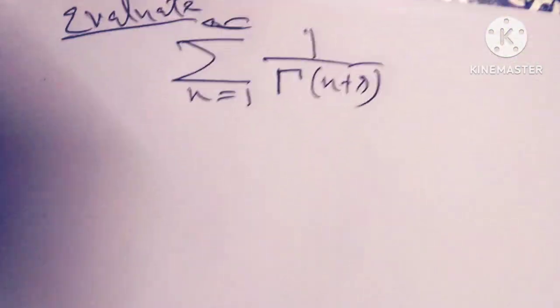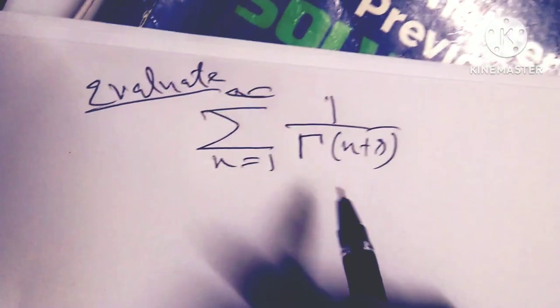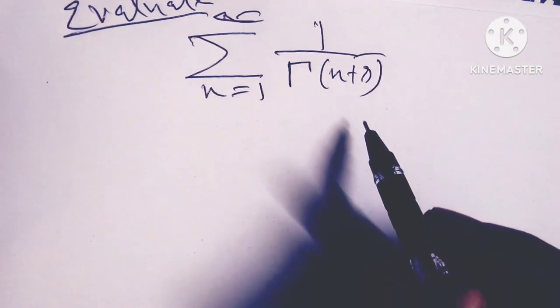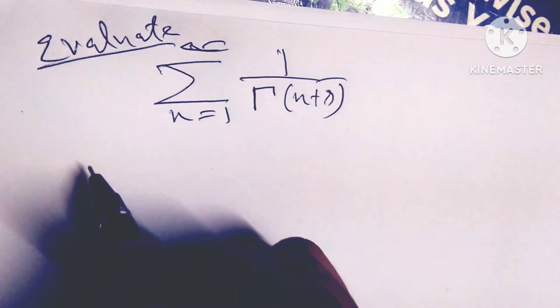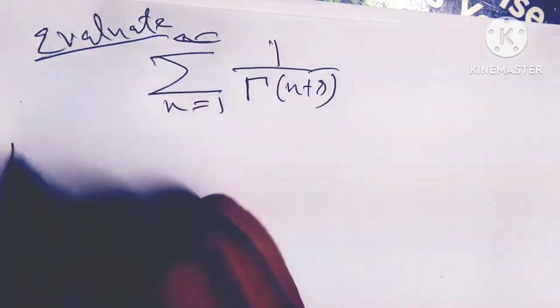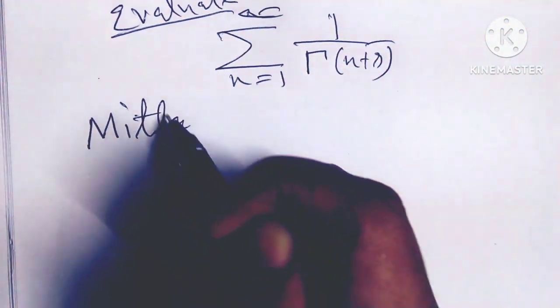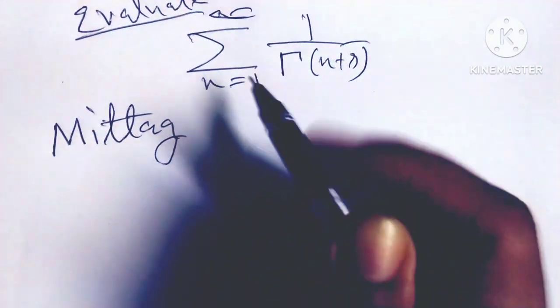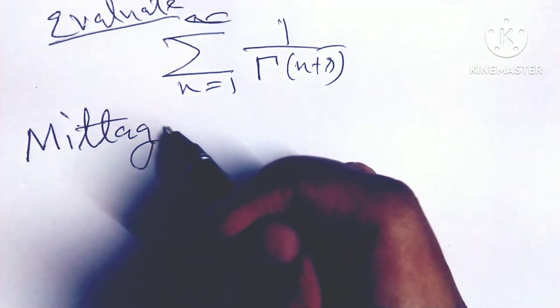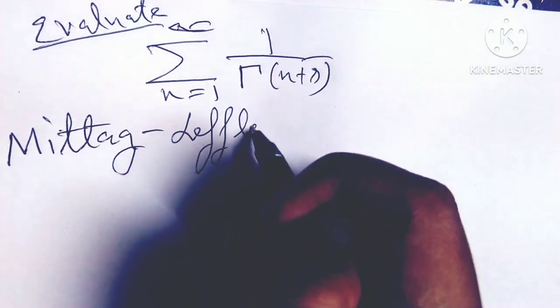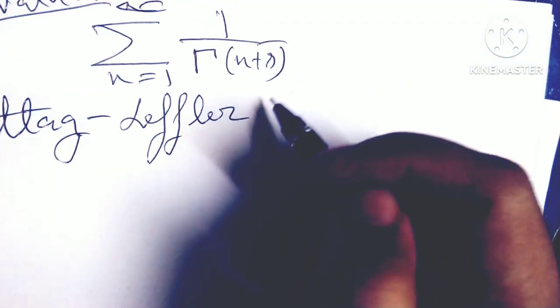Evaluate the sum from n equals 1 to infinity of 1 over gamma(n plus s). Friends, I will solve this formula through the Mittag-Leffler function.